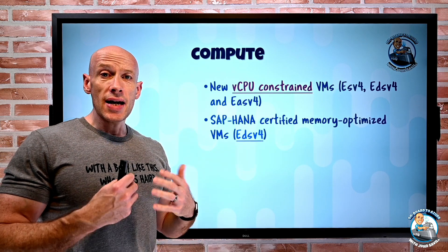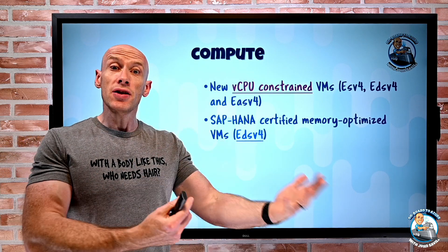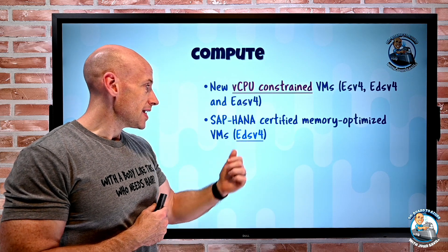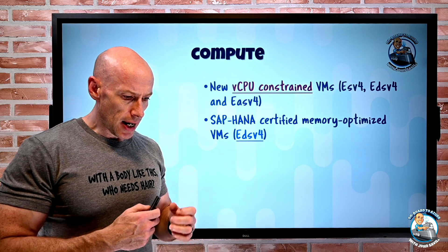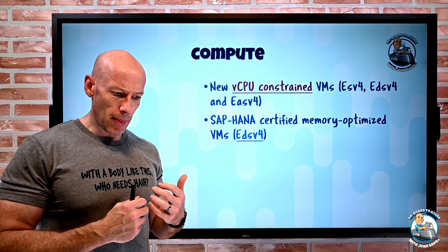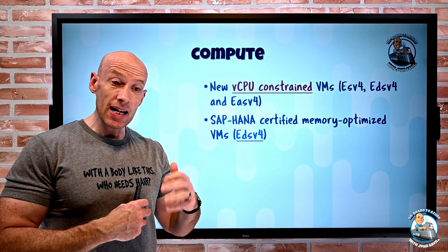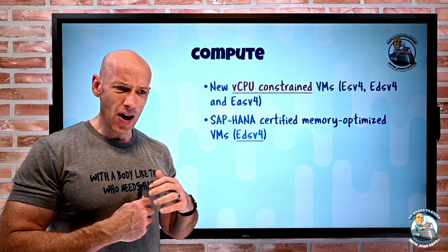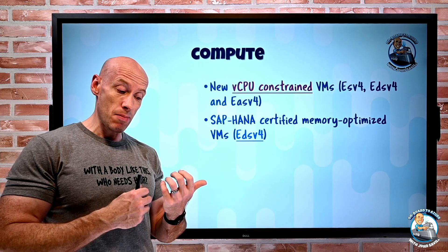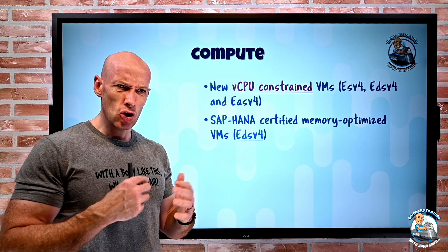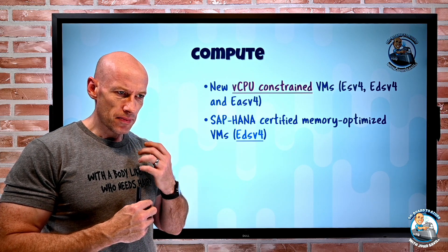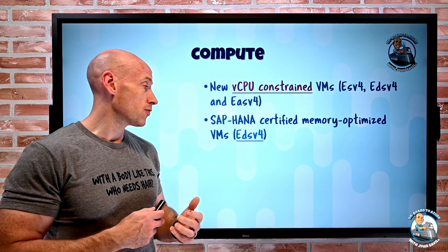There's now a new SAP HANA certified VM SKU, the EDS v4. This is built on the Intel Xeon Platinum Cascade Lake processors with up to 504 gigabytes of RAM and approximately 2.4 terabytes of storage.